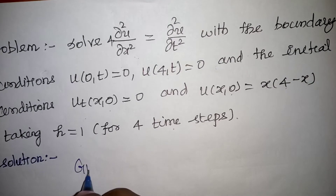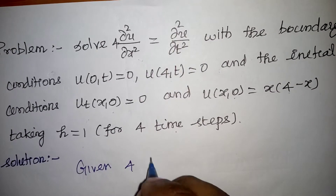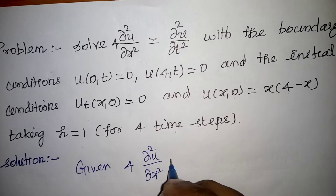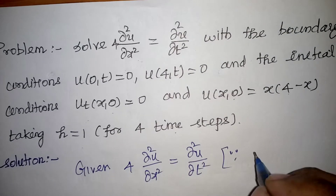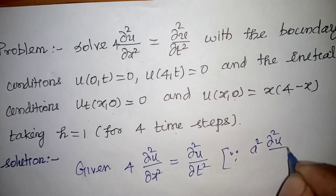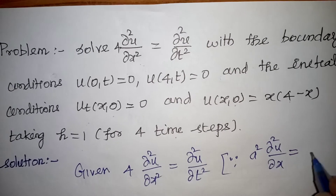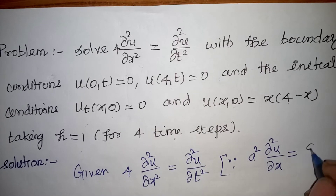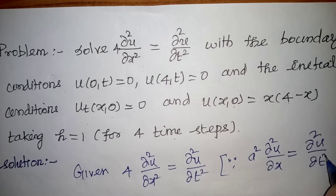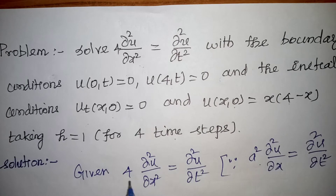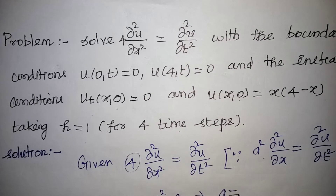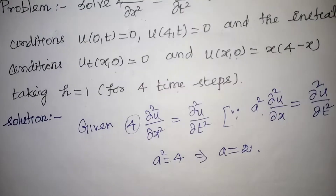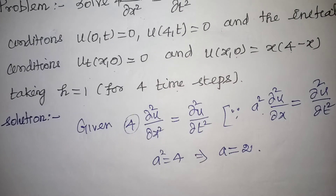From the given equation, comparing with the general form a²·(∂²u/∂x²) = ∂²u/∂t², we identify a² = 4, so a = 2.